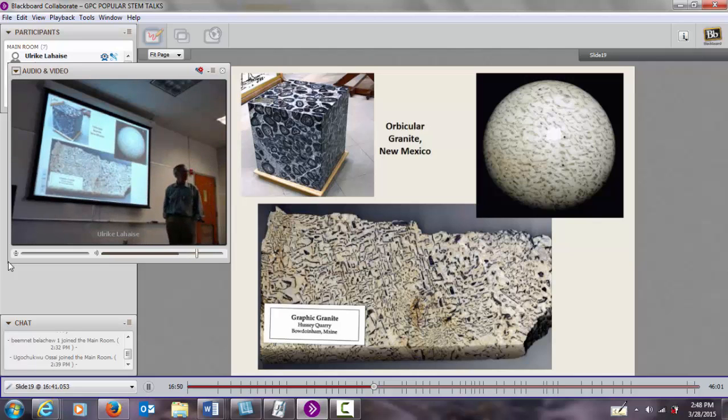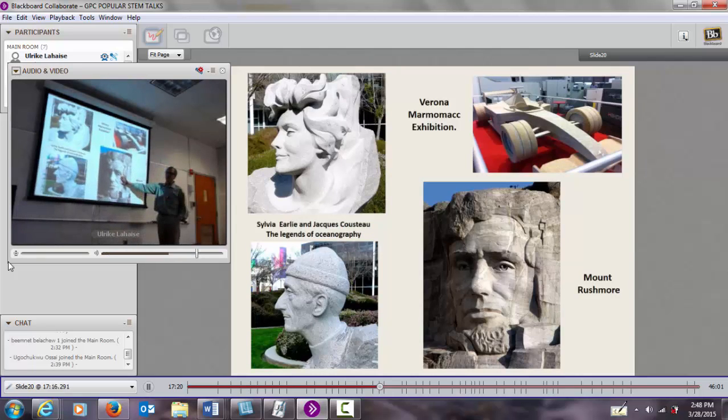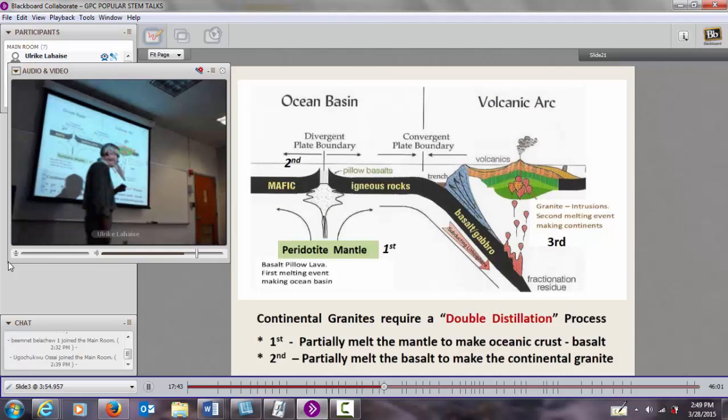We see granite in all sorts of things. Granite can occur in fractures, and we get this graphic granite from Maine. It looks like it's got graph patterns in it. We use orbicular granite from New Mexico, graphic granite from Maine, graphic granite from Colorado for decorative purposes. We use a lot of granite for monuments. We have Mount Rushmore. We have monuments to the legendaries of oceanography, Jacques Cousteau. Granite is a much tougher rock, and it requires what we'll now call double distillation.